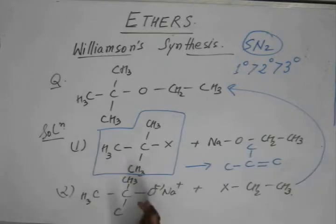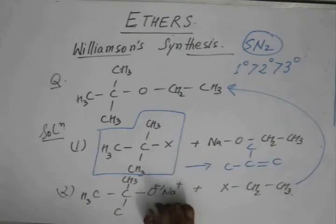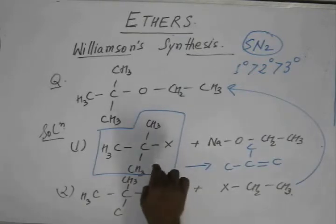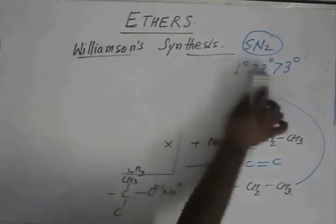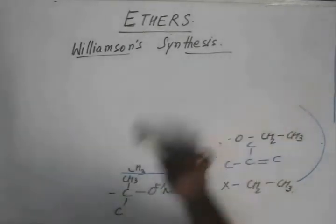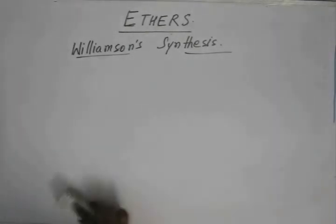So we always prefer, we always use the sodium salt of a 3-degree alcohol rather than using 3-degree alkyl halide. I hope you will keep this in mind. This is the only tricky step that is involved in Williamson synthesis. The rest of Williamson synthesis is very simple.